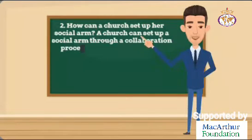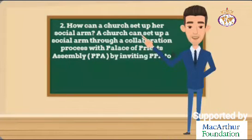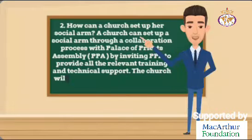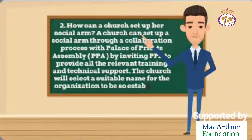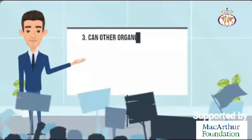Question 2: How can a church set up a social arm? A church can set up a social arm through a collaboration process with Palace of Priests Assembly (PPA), by inviting PPA to provide all the relevant training and technical support.